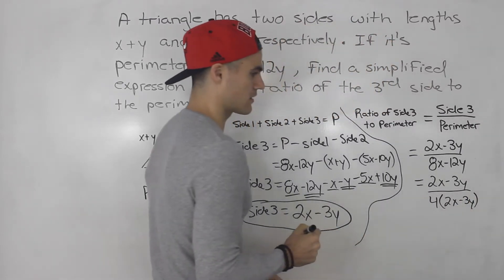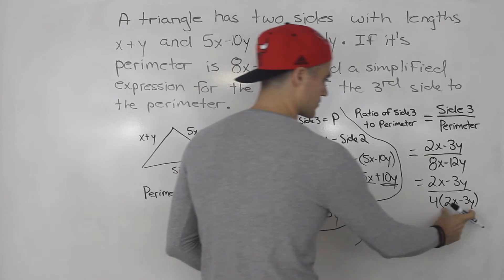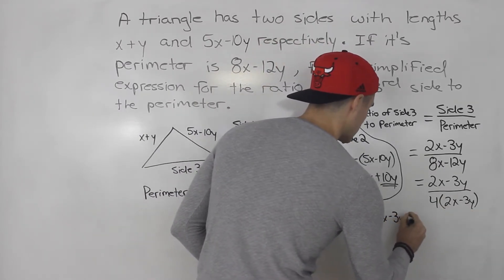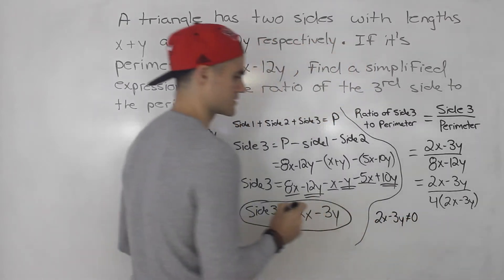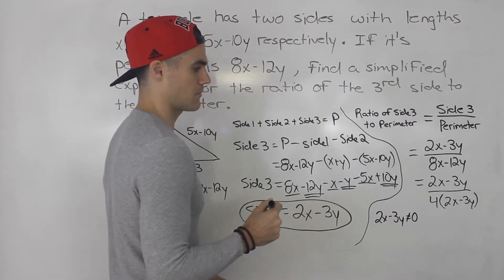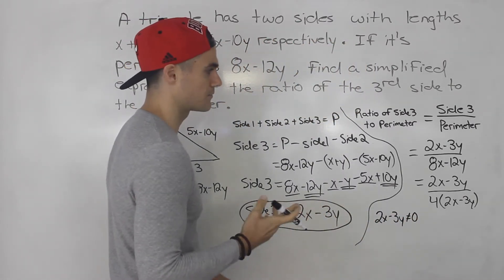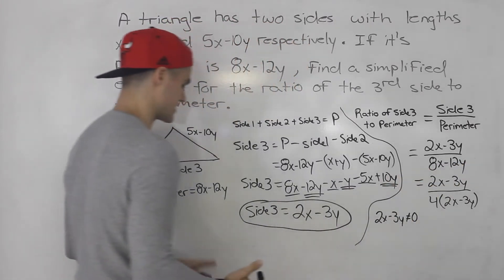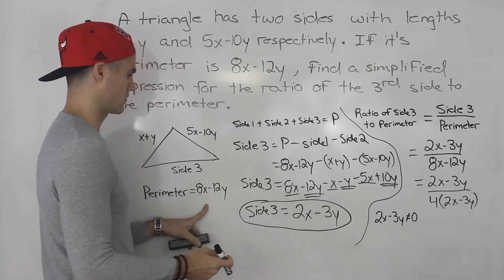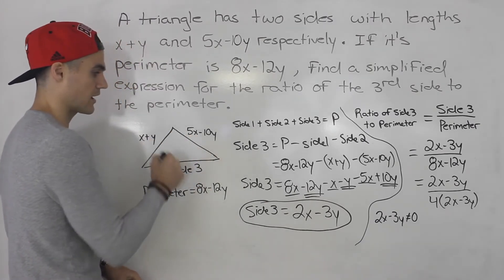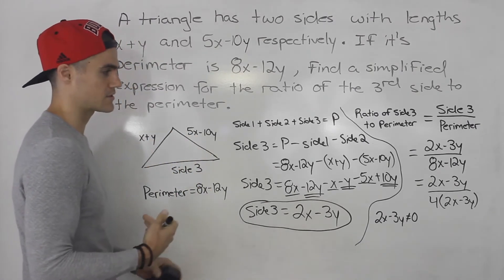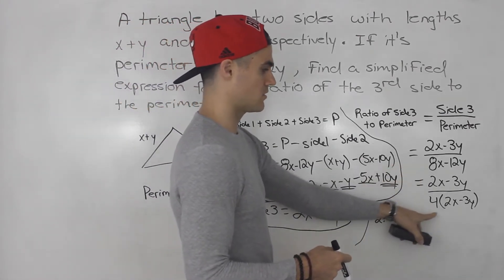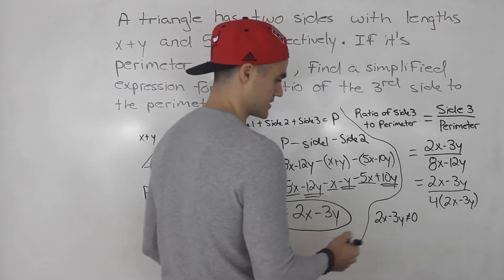And then from here, you want to get your restrictions before simplifying. Notice how 2x minus 3y cannot equal 0, because that would make the denominator equal to 0. And it wouldn't make sense for us to have a 0 perimeter. These sides are going to take some kind of value, so the perimeter is going to take some kind of value. Basically the denominator can't be 0, the perimeter can't be 0.